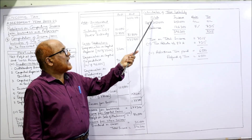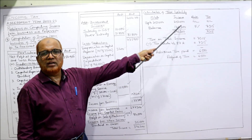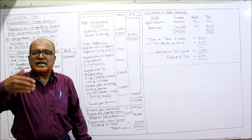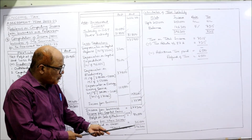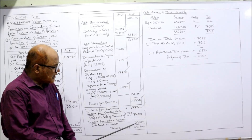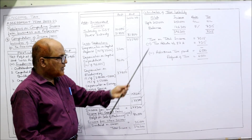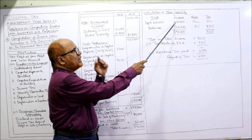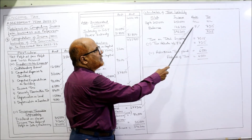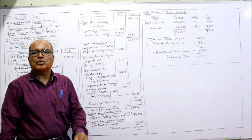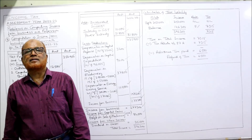On this total income, compute the tax liability using slabs. First slab: up to ₹2,50,000 — nil, no tax. Second slab: ₹2,50,001 to ₹5,00,000 — our income is ₹3,96,300, which is below ₹5,00,000. So balance = ₹3,96,300 minus ₹2,50,000 = ₹1,46,300. Tax at 5%: 5% of ₹1,46,300 = ₹7,315. So ₹7,315 is the tax on the total income.